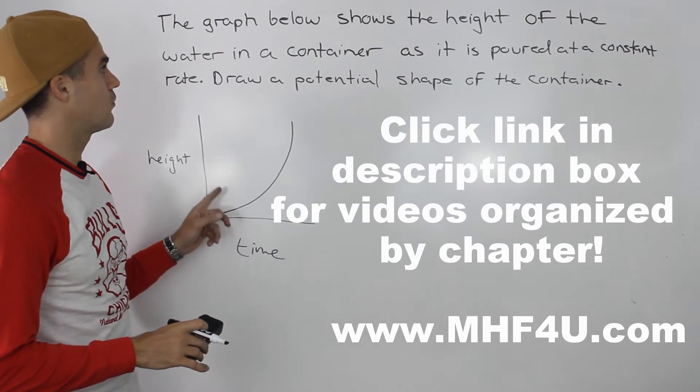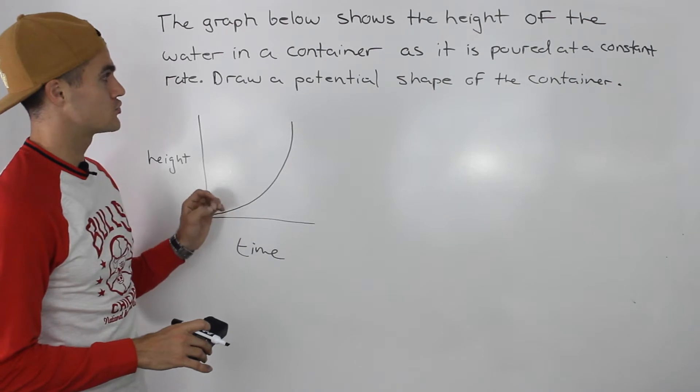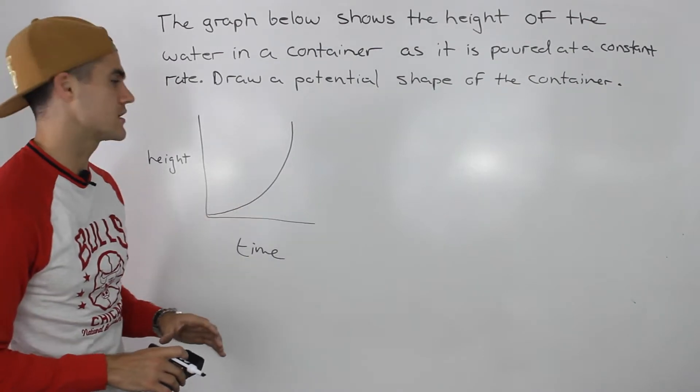So the graph below shows the height of the water in a container as it is poured at a constant rate. Draw a potential shape of the container.